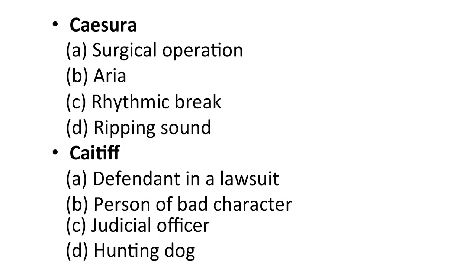Next is caitiff — is it A — a defendant in a lawsuit, B — person of bad character, C — judicial officer, D — hunting dog?